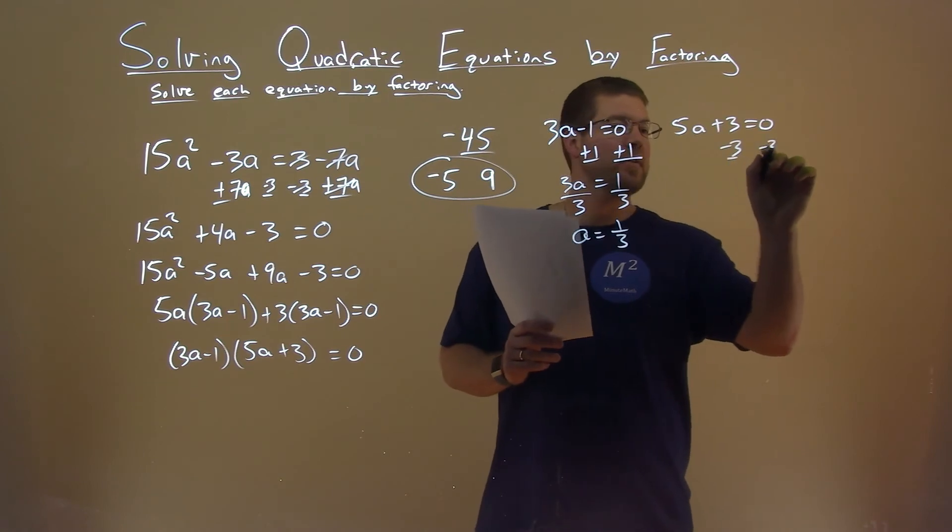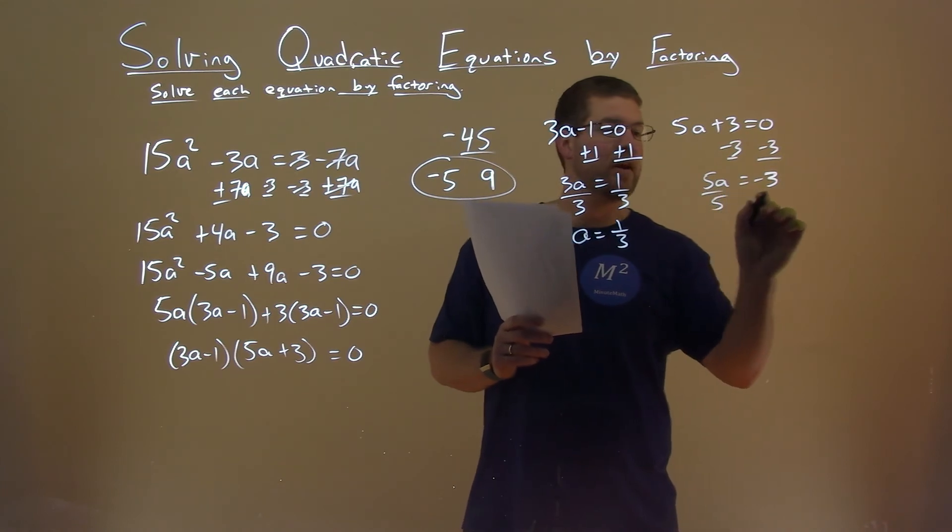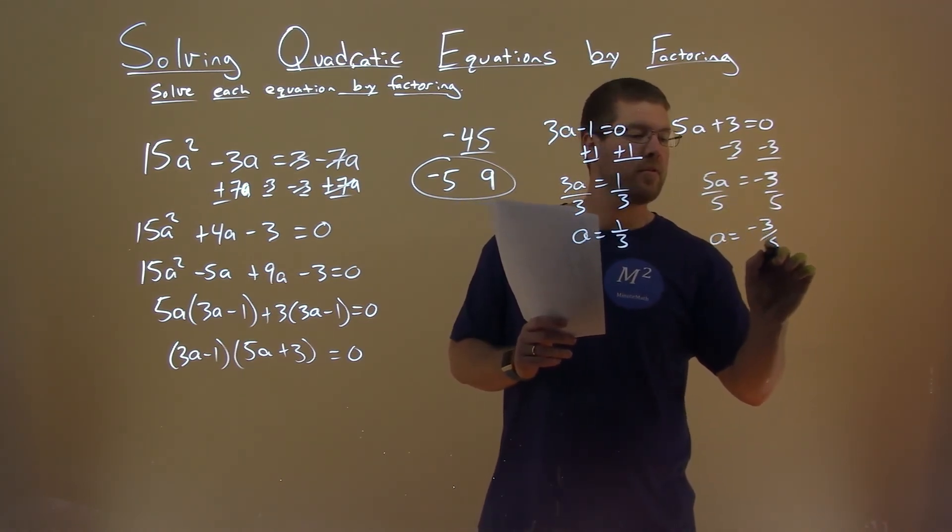Subtract 3 from both sides here. 5a equals -3. Divide both sides by 5, and a equals -3/5.